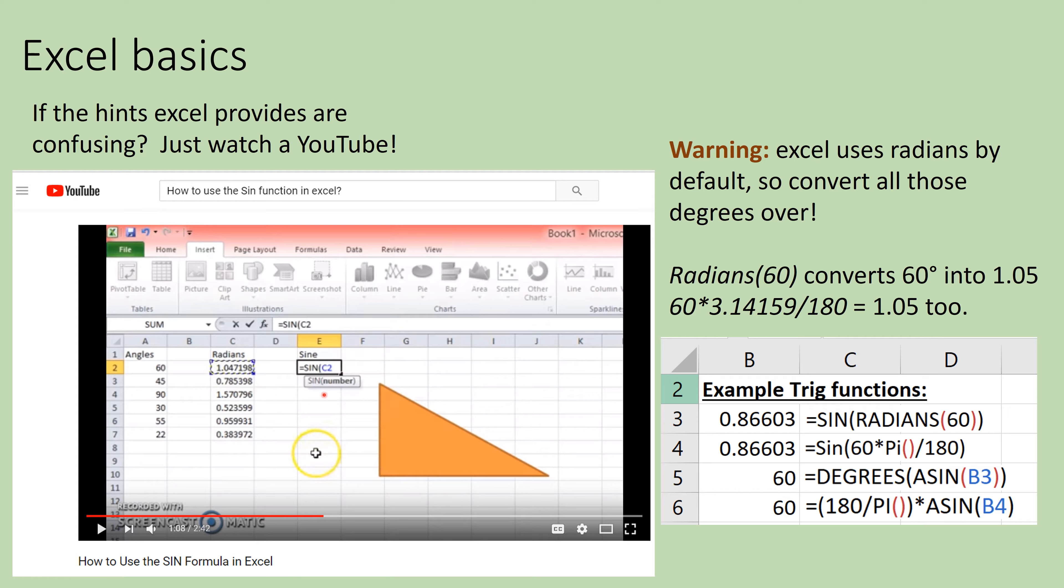One little warning: Excel defaults to using radians instead of degrees. And so there's a couple different ways to convert between radians and degrees. If you want, you can use the radian function. So if you just type in radian parentheses 60, this is going to convert that 60 degrees into radians to get the correct answer. Or you can just type in pi divided by 180. You get pi by capital PI and then empty set of parentheses. That's 3.14159. If I want to go back and get my 60 degrees back out, here's my arc sign, A sign, and I'm reaching up into B3. So I'm grabbing this result and I'm getting my 60 degrees out.